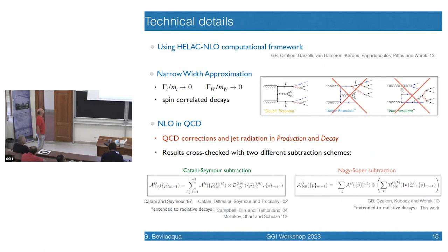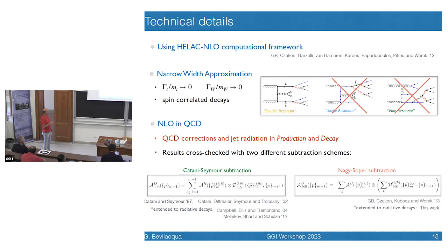We work in the narrow width approximation, so no single-resonant or non-resonant contributions are taken into account. We work at NLO QCD consistently in both production and decay. An important cross-check is that we validated every single resonant contribution to the cross-section using two different subtraction schemes — the Catani-Seymour subtraction and the Nagy-Sauker subtraction — which are based on completely different phase-space mappings. Both have been extended to handle subtraction from the top quark decay.